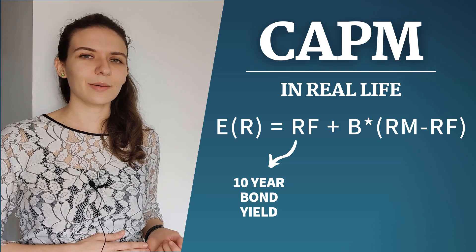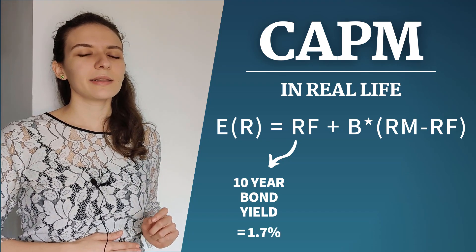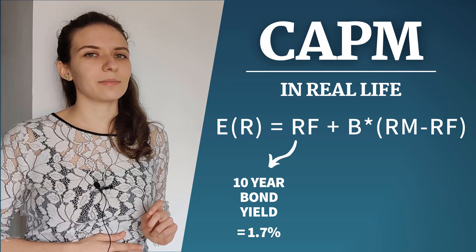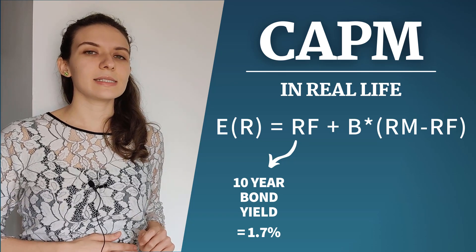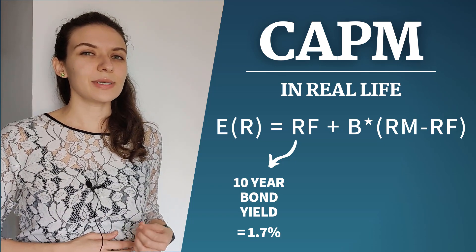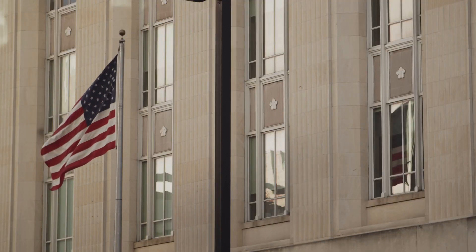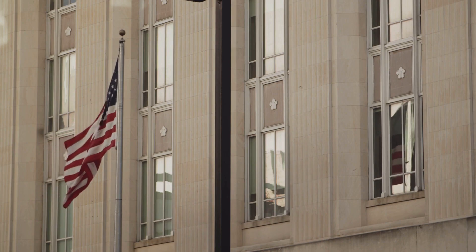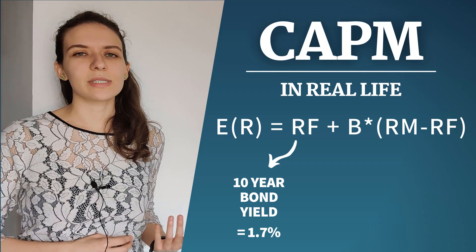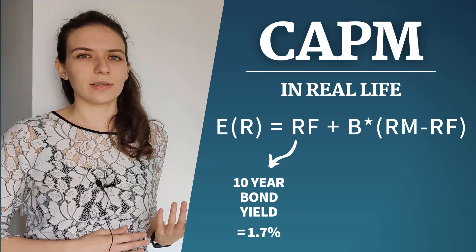In the real world, a proxy for the risk-free rate is given by the yield on 10-year government bonds. That is currently 1.7% in the US and 0.8% in the UK. They are considered risk-free because the probability that the US government defaults and isn't able to pay your return of 1.7% per year is really small, so the risk is considered negligible.